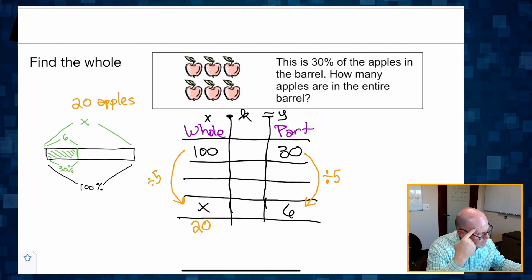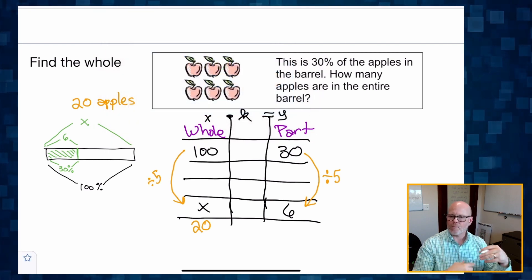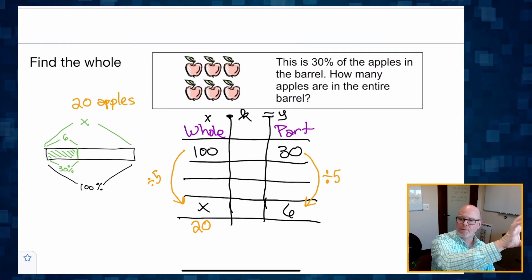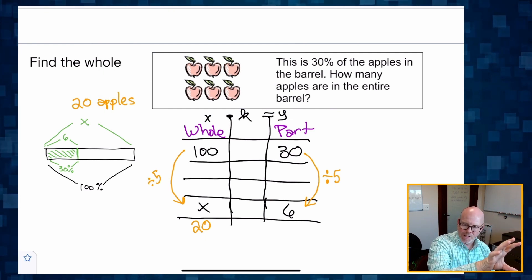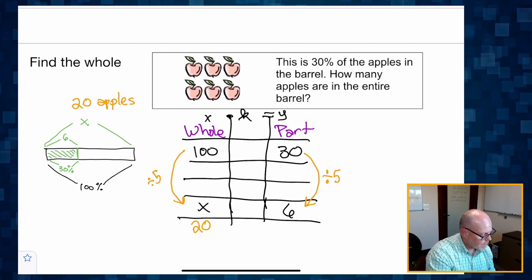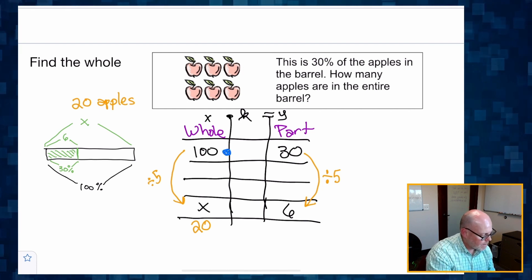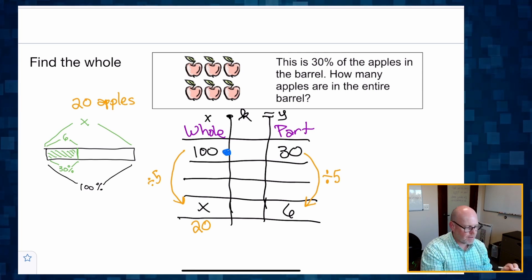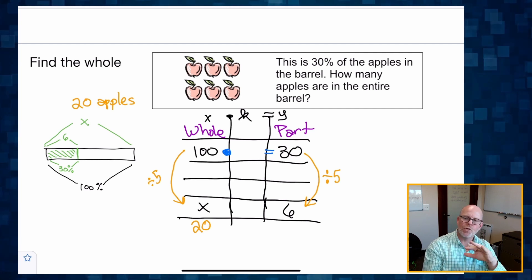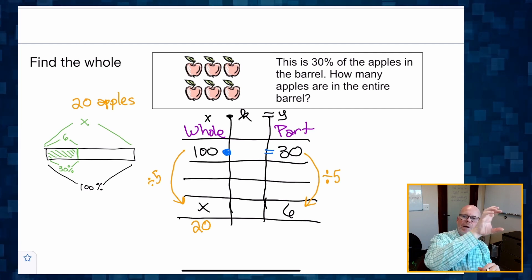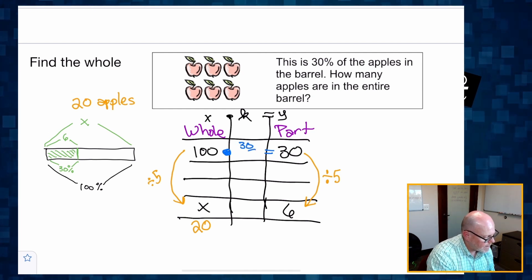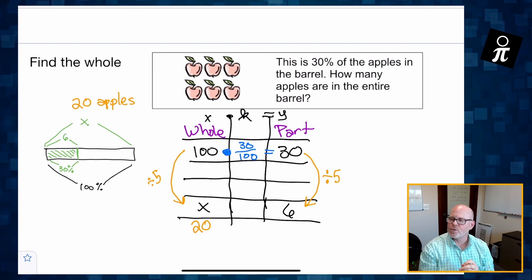So remember, and I'll do this in blue. Remember, we know that the whole number times the constant of proportionality is equal to the part. So a hundred times some constant of proportionality has to equal 30. So using division, 30 divided by 100, we know that the constant of proportionality has to be 30 hundredths.